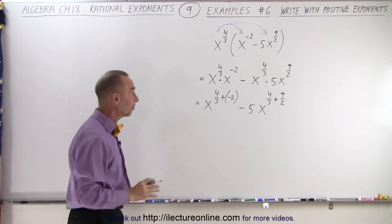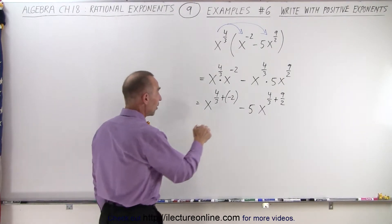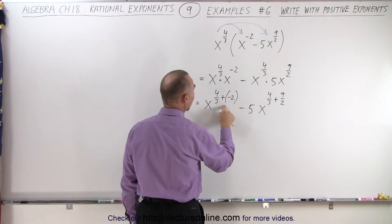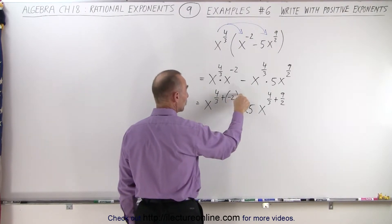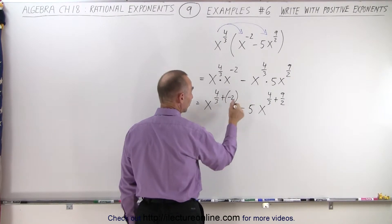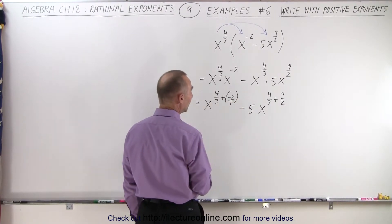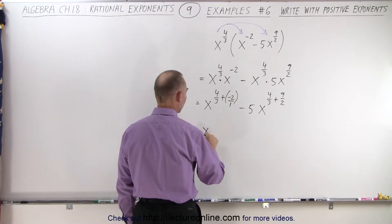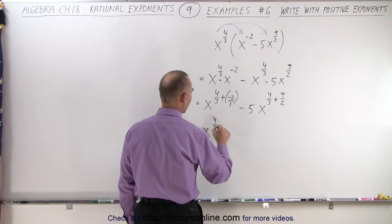Alright, let's work that out. First of all, in order to add these two together, this needs to be in a fractional format with a 3 in the denominator. So we have to multiply the numerator and the denominator by 3. This is basically -2/1. So this can be written as x to the 4/3.